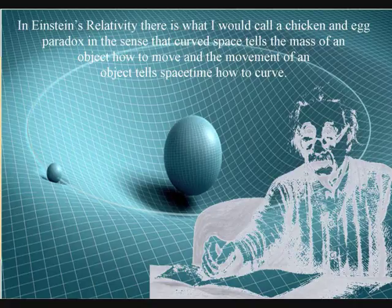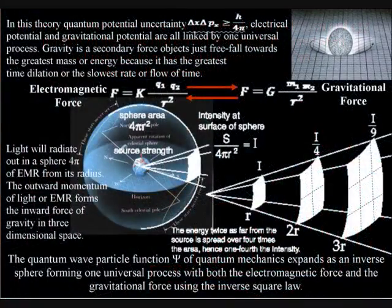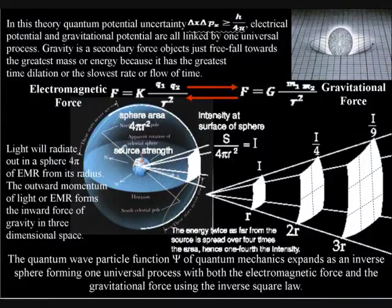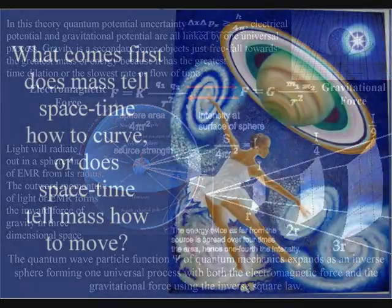In Einstein's relativity, there is what has been called a chicken-and-egg paradox, in the sense that curved space tells the mass of an object how to move, and the movement of an object tells spacetime how to curve. Just as in the chicken-and-egg paradox, there is no understanding of which came first.